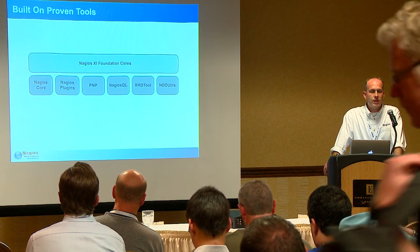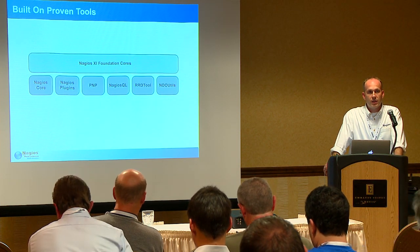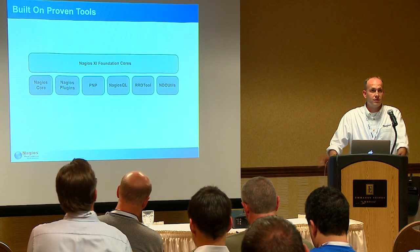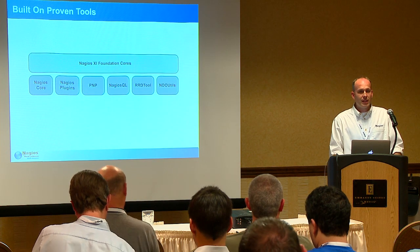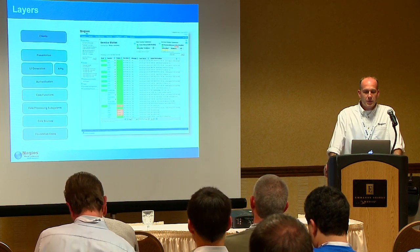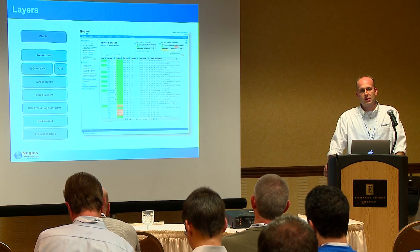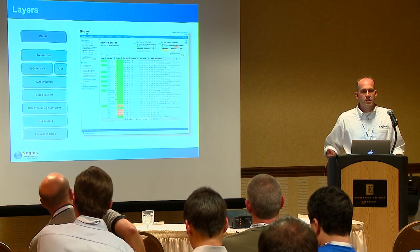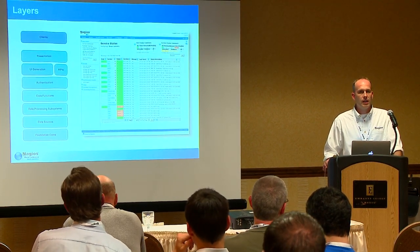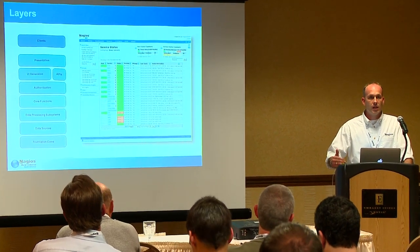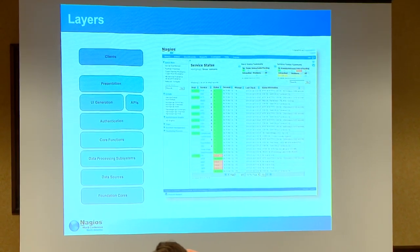That's kind of how Nagios XI got started. The first release was December of 2009 — we promised everybody it would be out by the end of the year, so New Year's Eve night we were uploading the first release. We really got it in the nick of time. We put a lot of thought into how it was designed so it would have maximum flexibility just like Nagios Core does, with support for plug-ins, add-ons, and the same type of architectural flexibility.